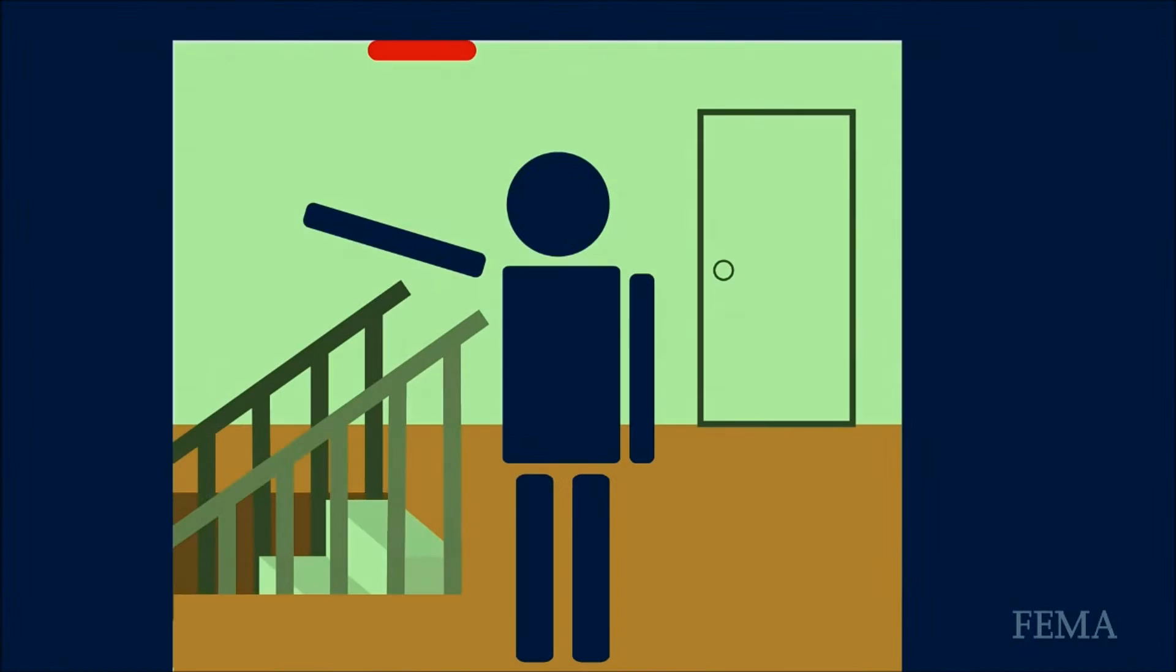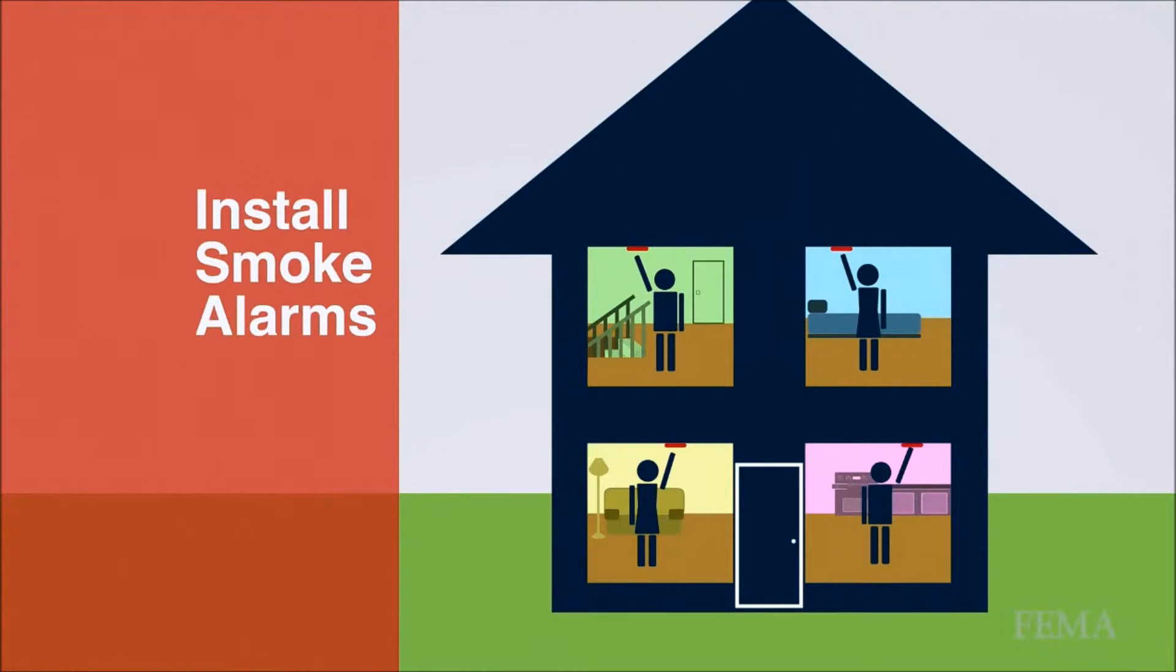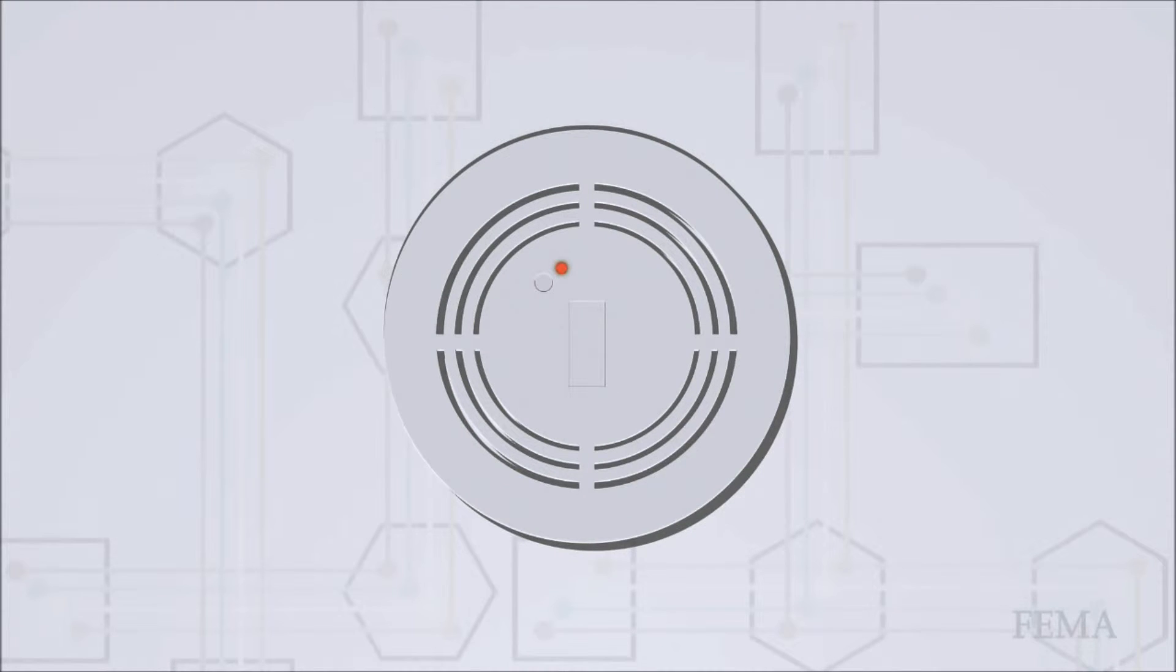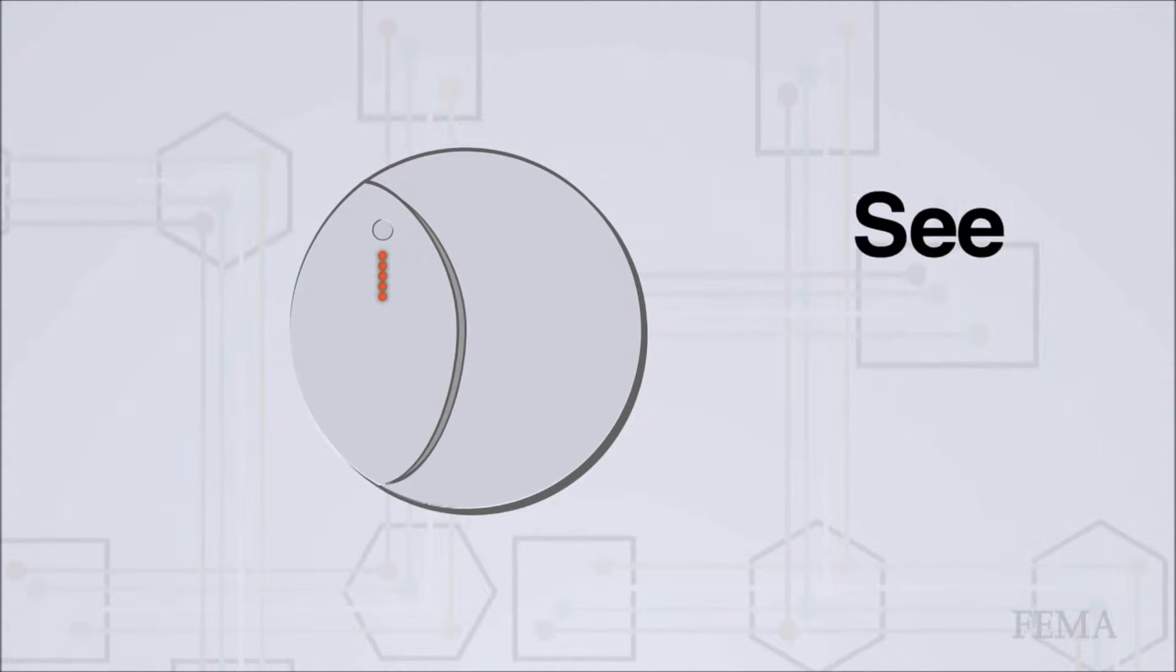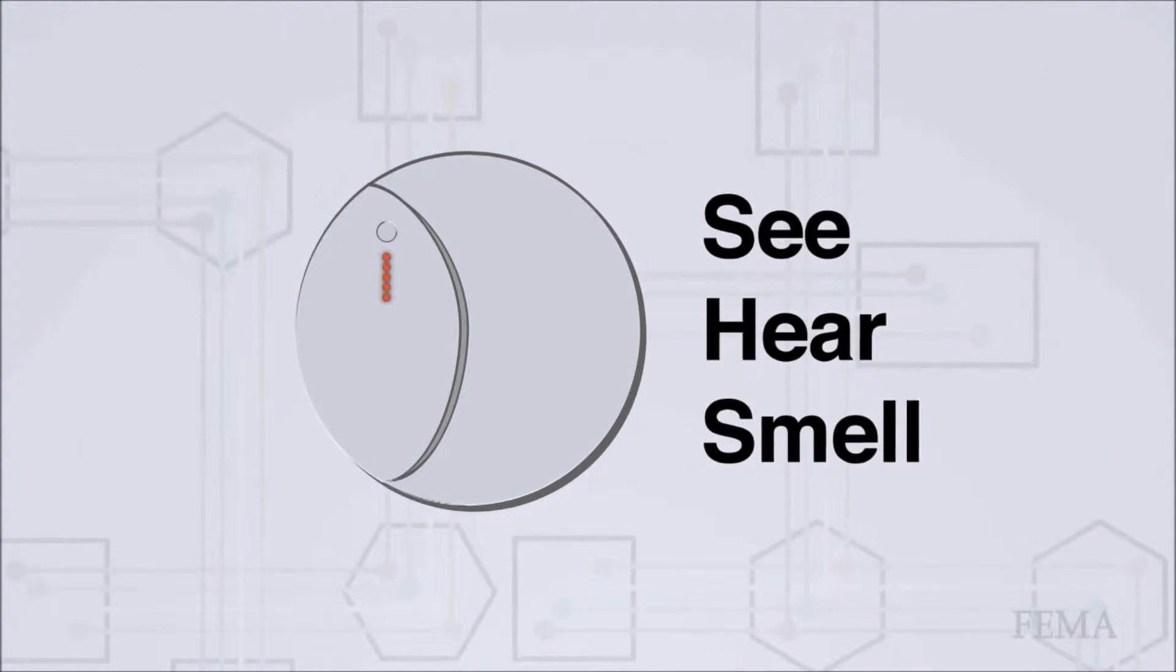Install smoke alarms inside and outside sleeping areas and on all levels of your home. Test alarms monthly and replace smoke alarms that are more than 10 years old. Alarms warn you of a fire before you see, hear, or smell it, giving you extra time to escape.